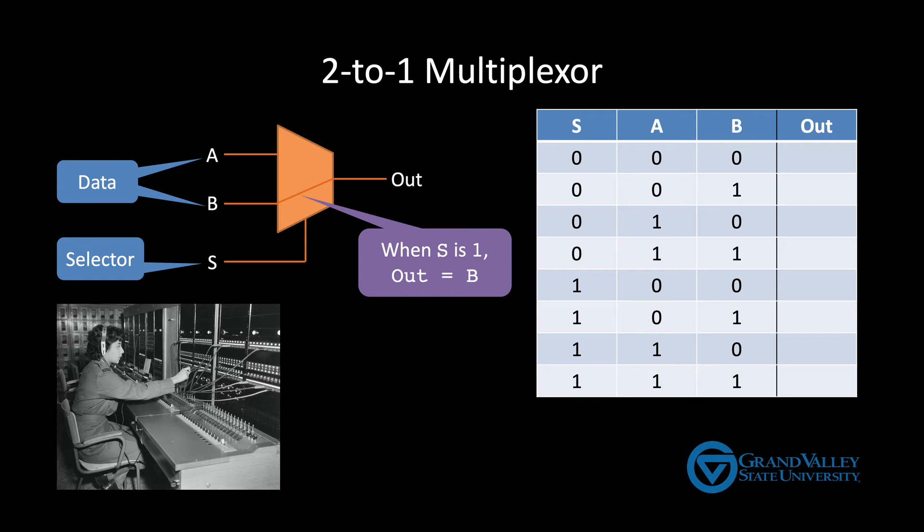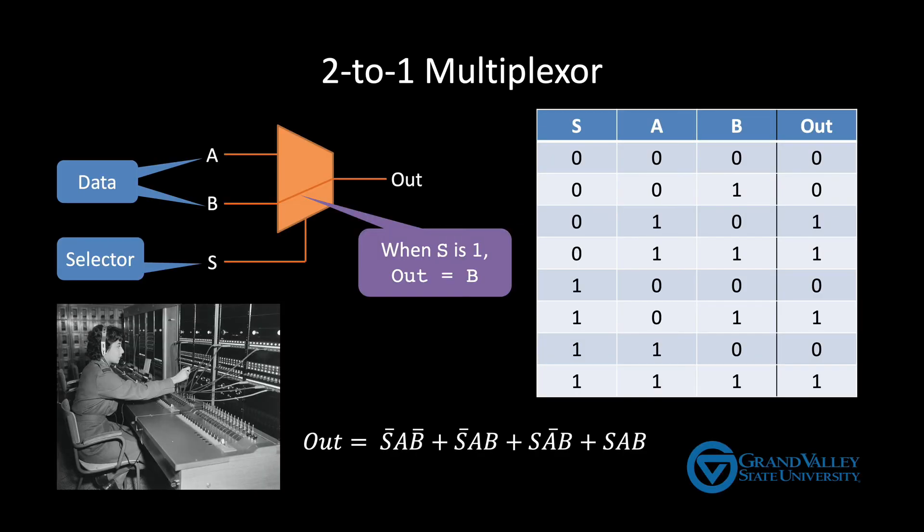When S is zero the output should be identical to A. When S is one the output should be identical to B. This truth table gives us this sum of products. This expression can of course be simplified but we'll save that for another video. The version here is sufficient to conceptually show how this circuit can be built.